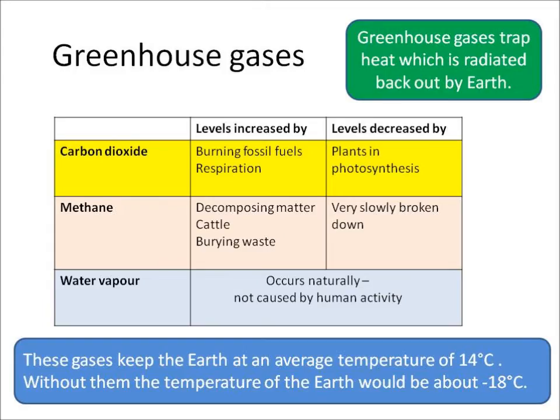Those gases, which you need to know, are carbon dioxide, methane, and water vapor, and they are called the greenhouse gases. If they weren't there, the temperature of the earth would be about minus 18 degrees. We're looking at those three greenhouse gases which are in the air either naturally or because of human activity.